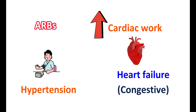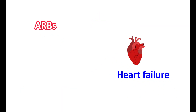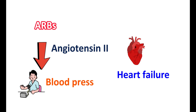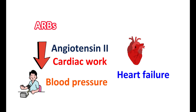When hypertension is untreated, cardiac overload can reduce cardiac efficiency, thereby reducing the pumping ability of the heart. ARBs work in heart failure in two ways. First, they reduce the actions of angiotensin 2, thereby producing vasodilation. This reduces blood pressure, thereby reducing cardiac work and increasing cardiac efficiency.